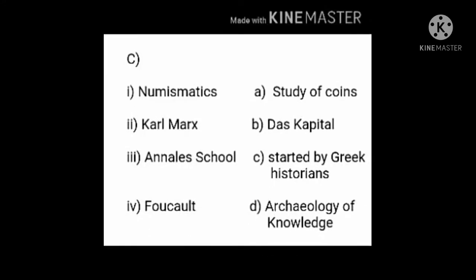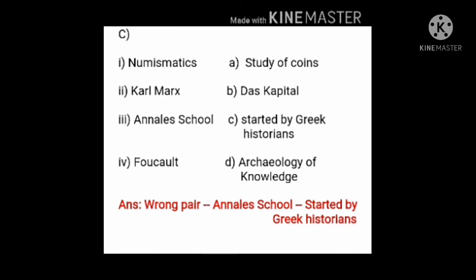Now let's read the third identify. The pairs are: Numismatics — Study of Coins; Karl Marx — Das Capital; Unheld School — started by Greek historians; and Foucault — Archaeology of Knowledge. Among these four, the wrong pair is Unheld School — it was started by French historians, not Greek historians. So write down the wrong pair: Unheld School — started by Greek historians.